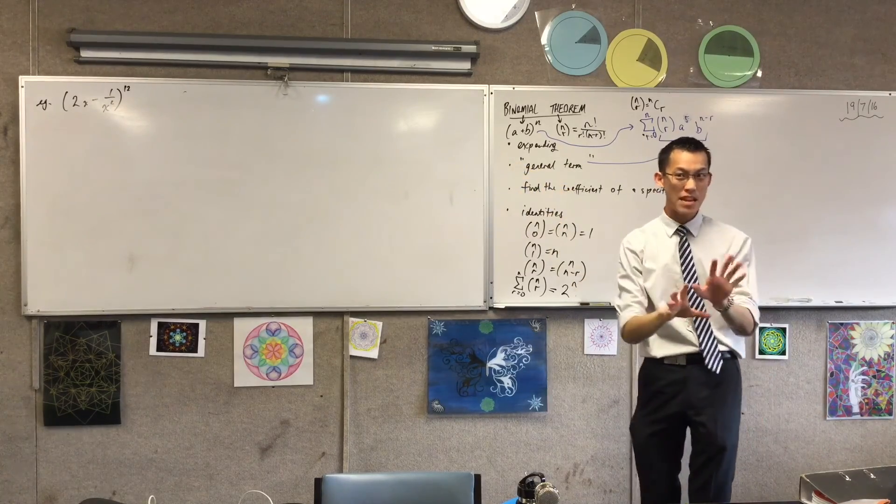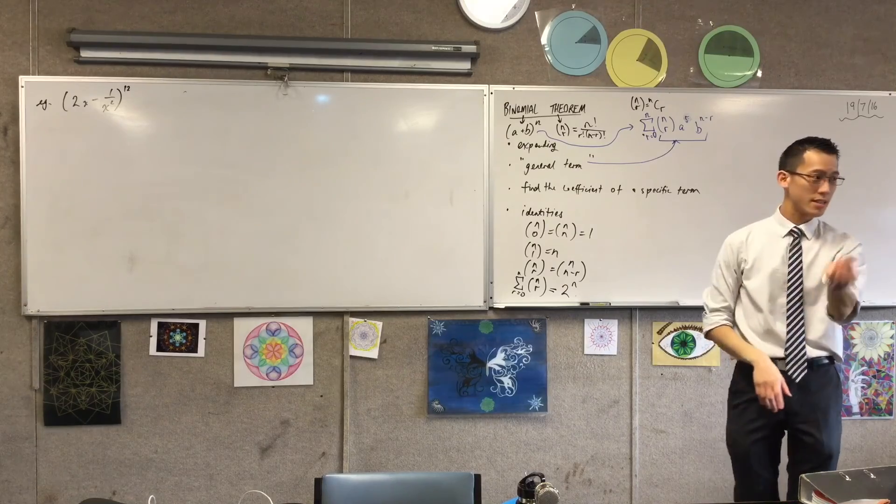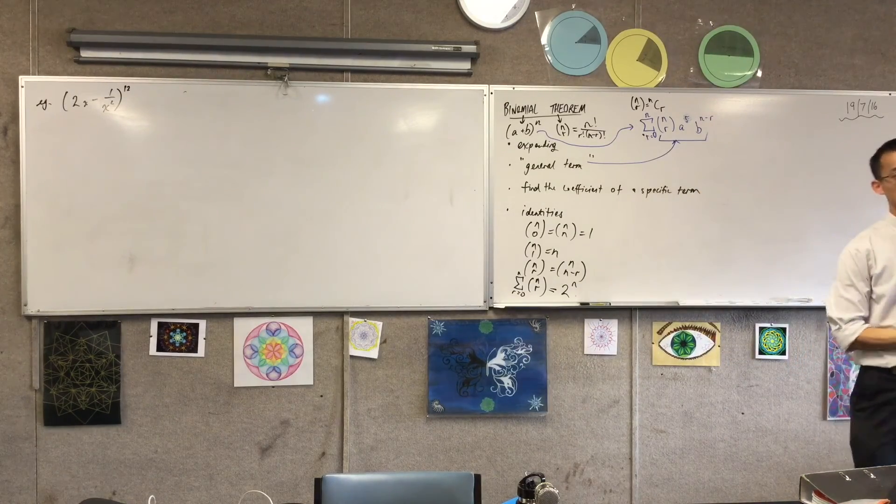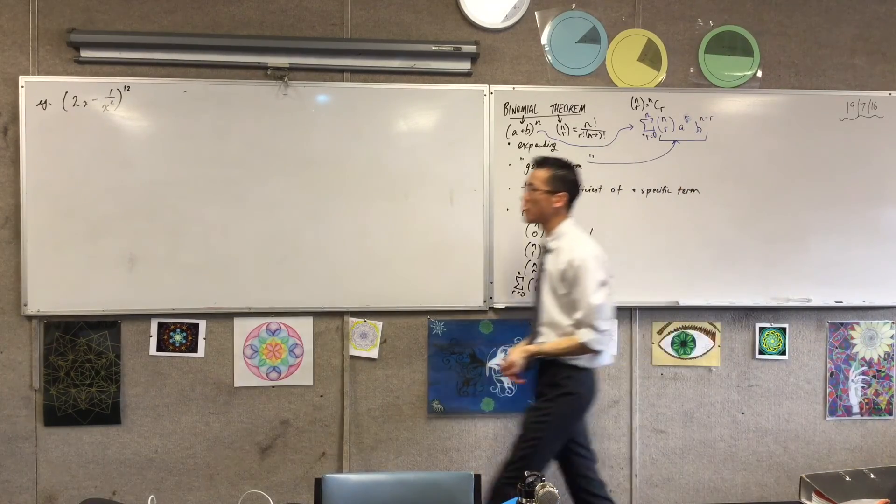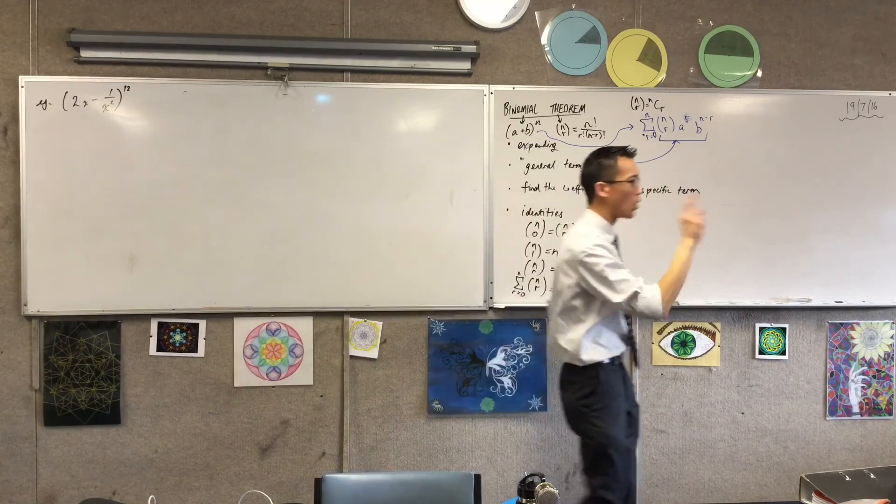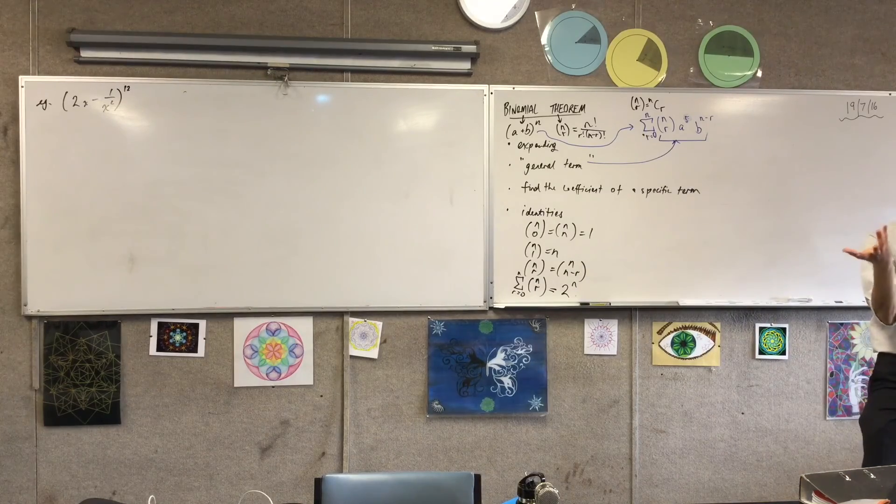There's a binomial expansion, bit of a messy one. I wonder if you can find out what is the term in that expansion that is independent of x. Or another way of saying that is what's the constant term. Most of the terms are going to have some x's floating around in this, so they'll be variable, but there'll be one term, and not only one, that's a constant, has no x's in it, independent of x.